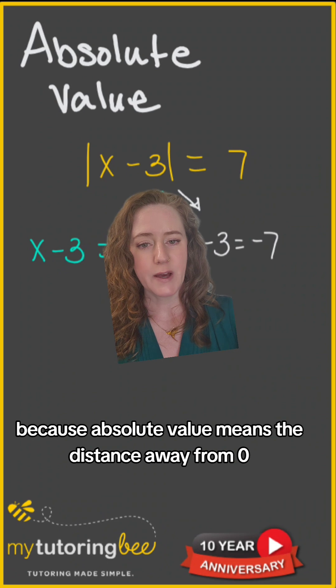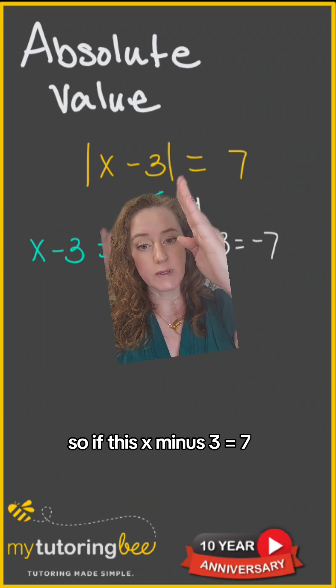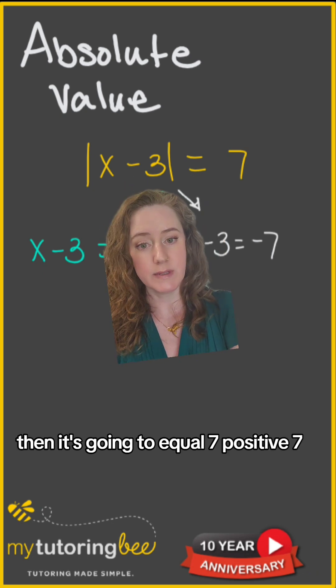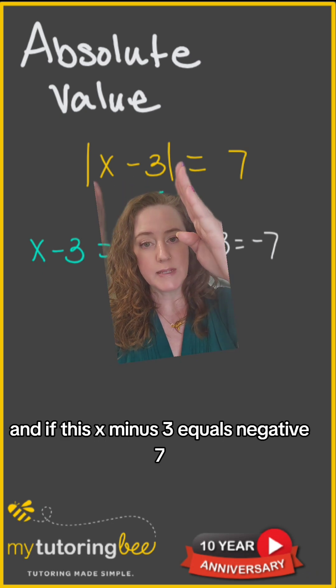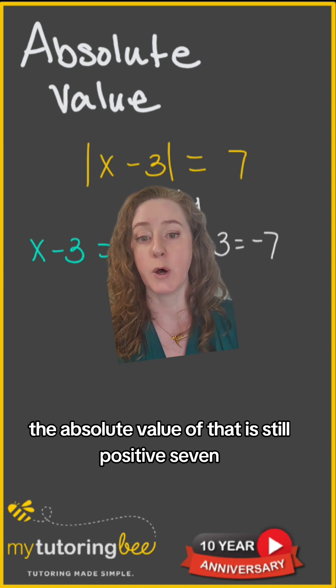Because absolute value means the distance away from 0. So if this x minus 3 equals 7, then it's going to equal 7, positive 7. And if this x minus 3 equals negative 7, the absolute value of that is still positive 7.